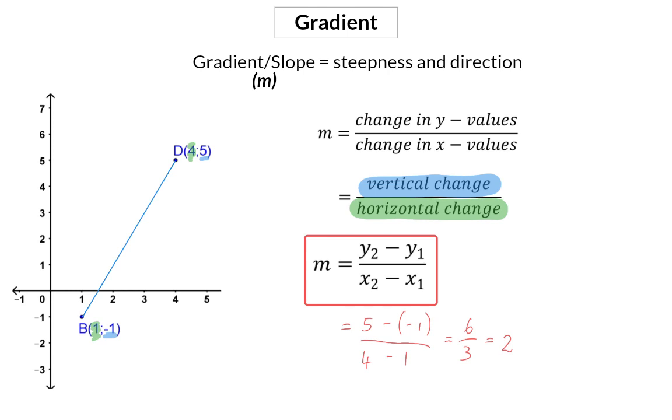The gradient indicates the steepness and direction of the line. So the plus 2 or positive value indicates that this line is increasing or moving up from left to right. And then the 2 tells us that for every 1 we move in the positive x direction, you have to move up 2 in the positive y direction.